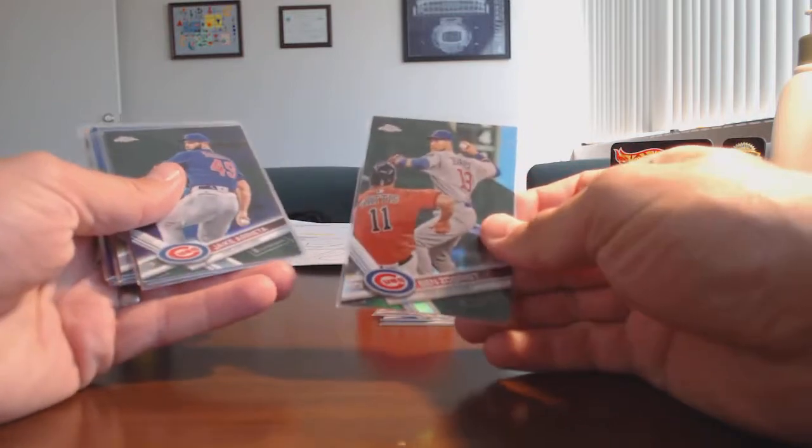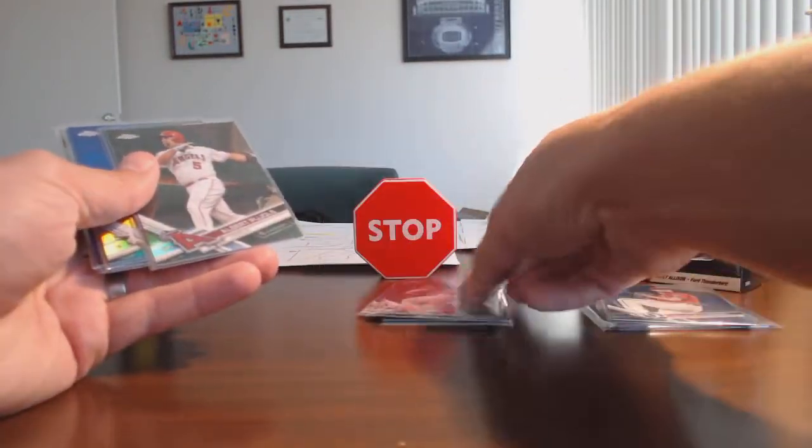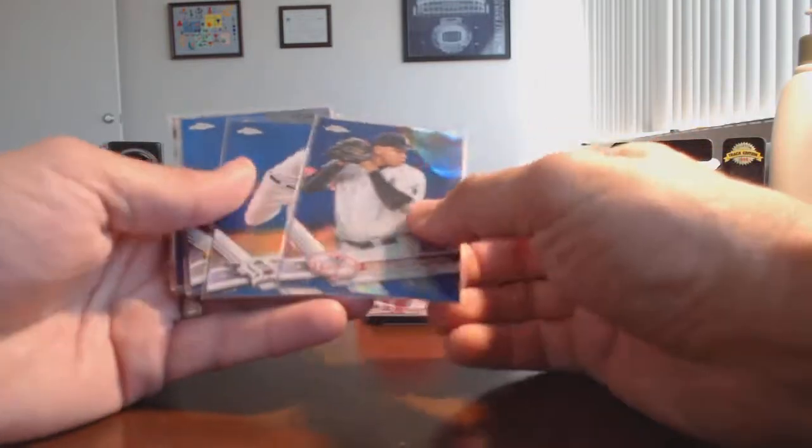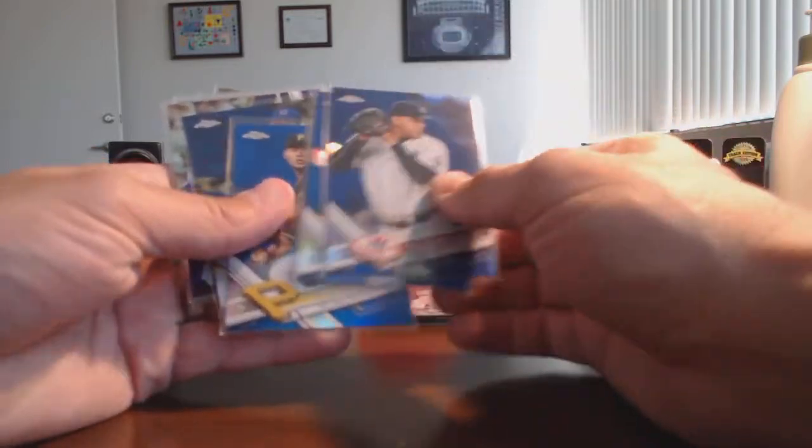Those are going to be for trade. Here's a green Ben Zobrist, a green Arrieta, green Albert Pujols. Greens will be for trade as well. Then the blues that I need, we've got Betances, Norris, and Nova and Hendricks.